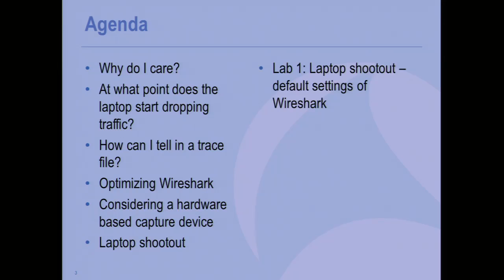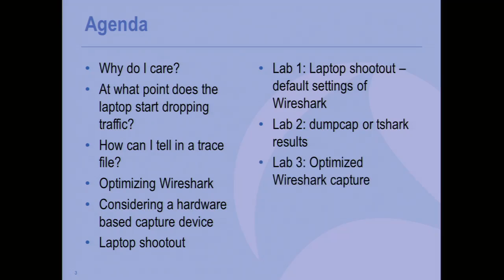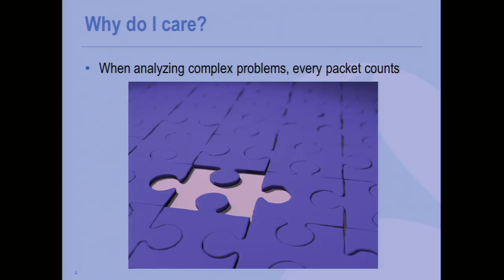I'm going to have a couple of labs, flipping in and out of PowerPoint and back to Wireshark. We'll look at, first, just the default settings of Wireshark — what happens when I slam a gig of traffic at it? Next, command-line DumpCap: does that make any difference? Do I buy any bandwidth, so to speak, or can I handle higher utilization with a command-line-based capture? And then, also, optimized Wireshark capture. So let's get into that first question: why should I care about this in the first place?